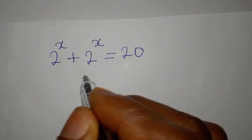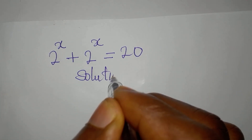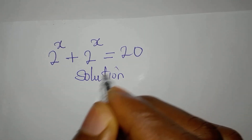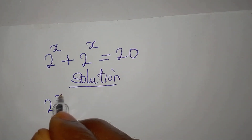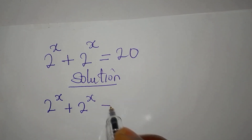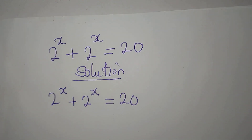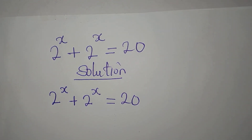Hi everyone, let's provide a solution to this problem: 2 to the power of x plus 2 to the power of x equals 20. We want to provide the complete solution to this problem.